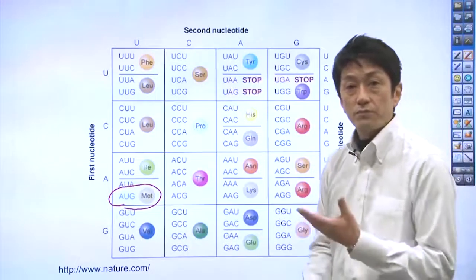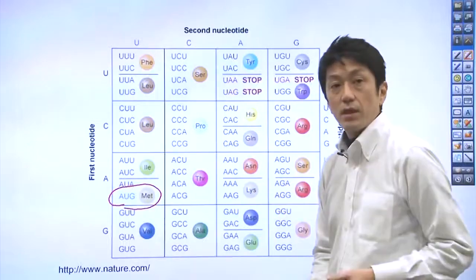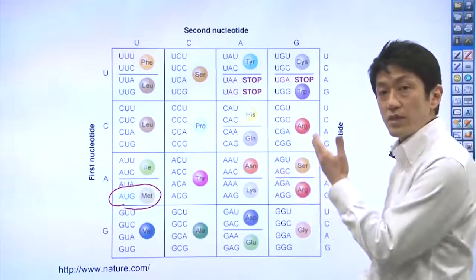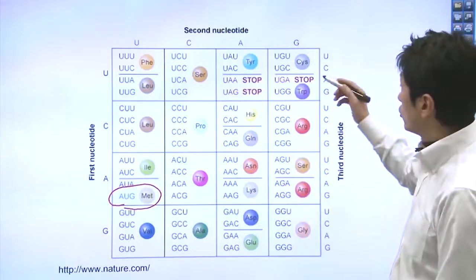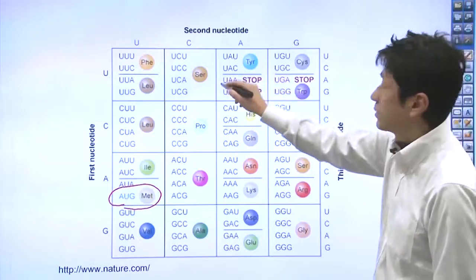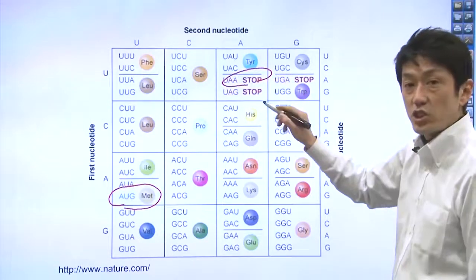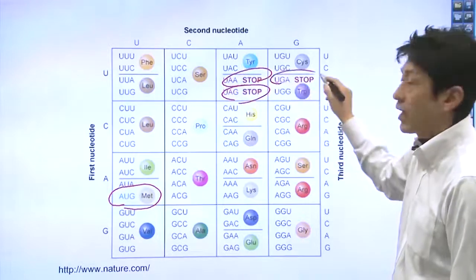AUG is methionine. And it ends with the sequence UAA, UAG, or UGA.